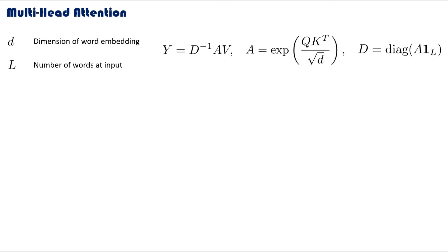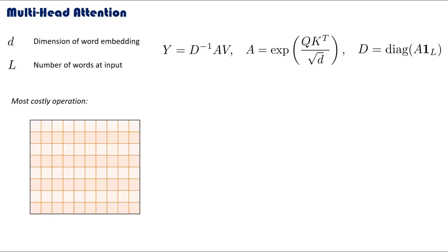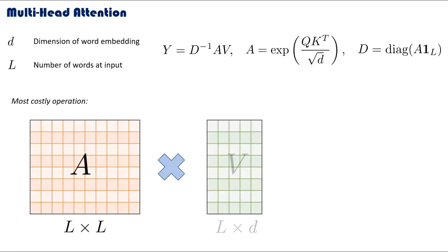So far we had this formula for an attention mechanism, but what is the most costly operation in terms of time in this formula that will be required to be performed by a computer? Well, that would be the tensor A multiplied by the V matrix. We can clearly see that the number of operations to multiply these two matrices will be L squared times d. Recall L represents the number of words at the input. This order of complexity means we have a quadratic relationship between the number of input words and the time taken to execute the attention mechanism.